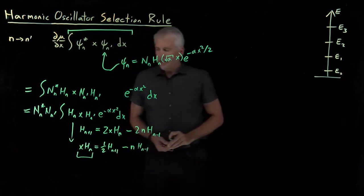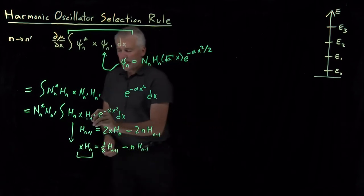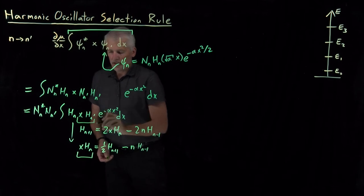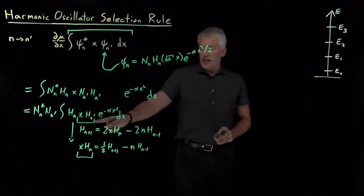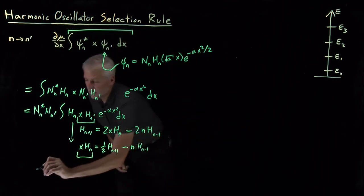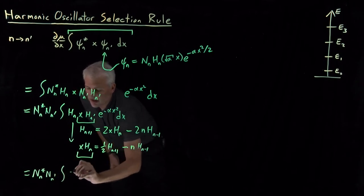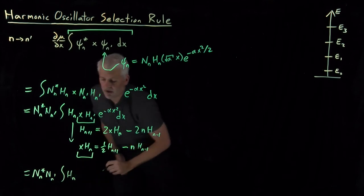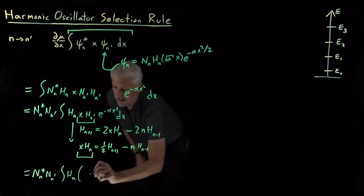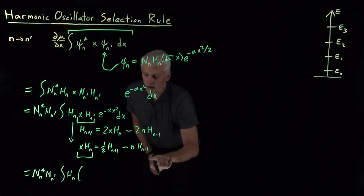So that x times H_n, I'll use that to replace this x times H_n prime. So my integral has now become, I've got constants out front. The integral now looks like the n-th Hermite polynomial multiplied by what I have written here, 1 half of the n plus 1st polynomial...